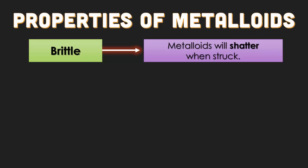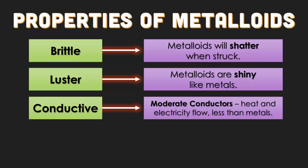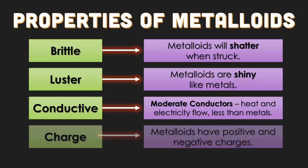We also have what's called metalloids, which fall on a very peculiar spot of the periodic table. Metalloids are brittle, which means that if you hit them they will shatter — just like non-metals. But they also have a luster, which means they're shiny, just like metals. They are conductive, meaning they do allow heat and electricity to flow through them, but not as well as metals — but much better than non-metals. They also have the ability to have a variable charge, so metalloids can either be positive or negatively charged, meaning they have the unique ability to become anions or cations. You have to use your periodic table and look at the charges to determine if electrons are lost or gained.